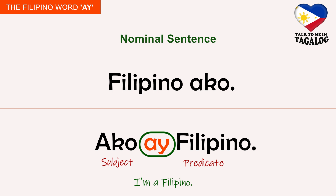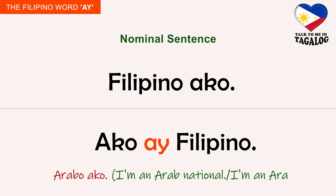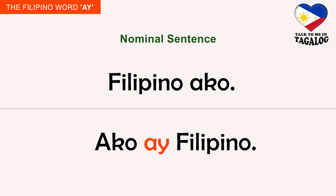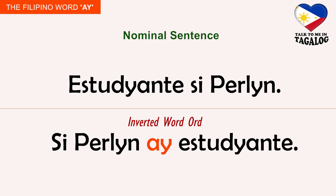Let me remind you that we don't use the inverted word order in conversations. So if you want to introduce yourself to a new friend, you should say, for example, 'Amerikano ako' — I'm an American — or 'Arabo ako' — I'm an Arab national. Next example: 'Estudyante si Perlin' means Perlin is a student. The inverted word order is 'Si Perlin ay estudyante'.